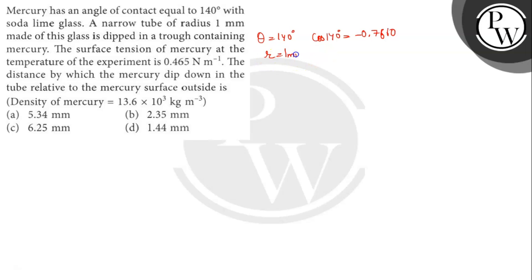Surface tension is 0.465 Newton per meter. The density is 13.6 into 10 to the power 3 kg per meter cube.